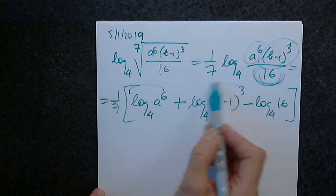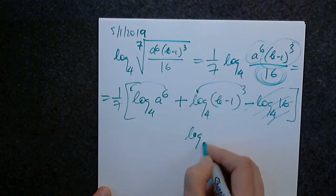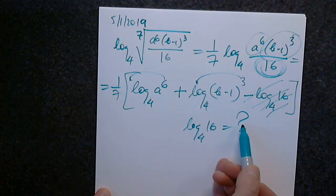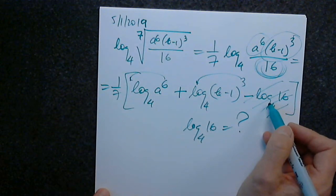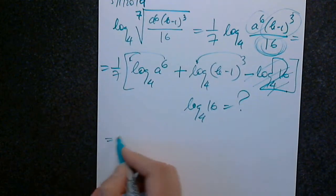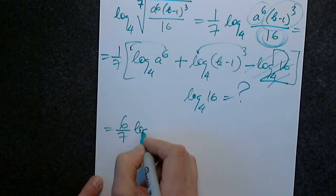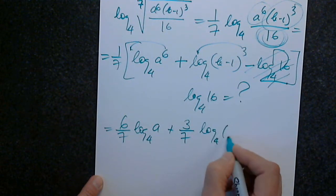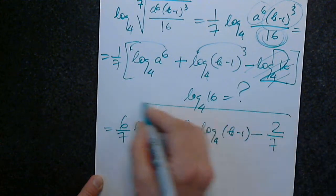All we have to do is move the power in front and change log base 4 of 16 into what it equals. Log base 4 of 16 — base raised to something equals 16, so that equals 2. Now put the 6th in front and distribute 1 over 7: 6 over 7 log base 4 of a plus 3 over 7 log base 4 of b minus 1, minus 2 over 7 is the final form.